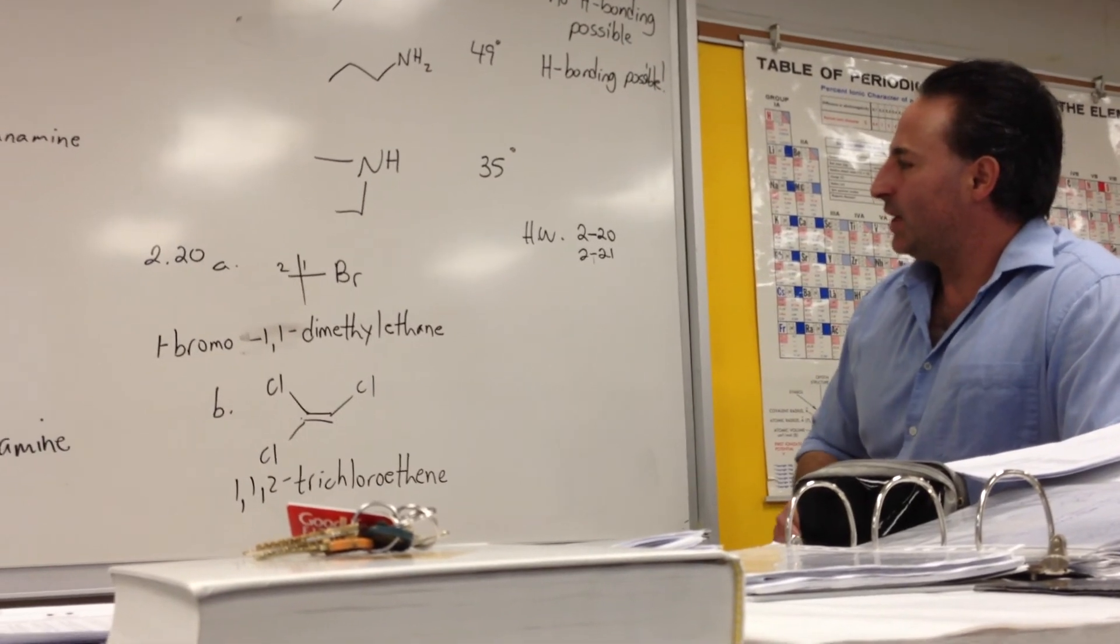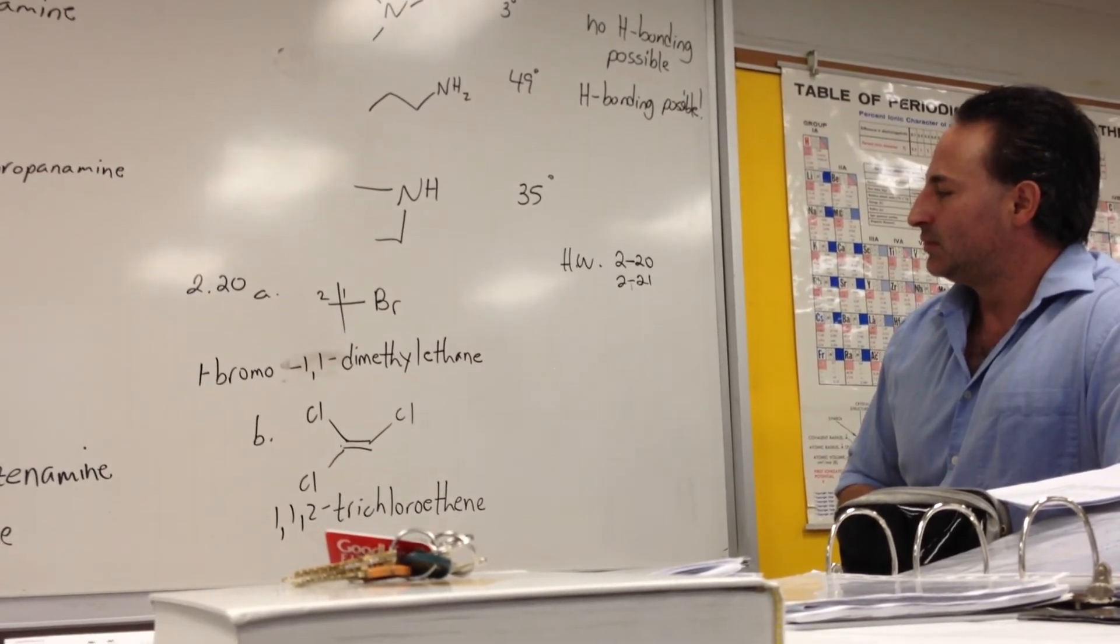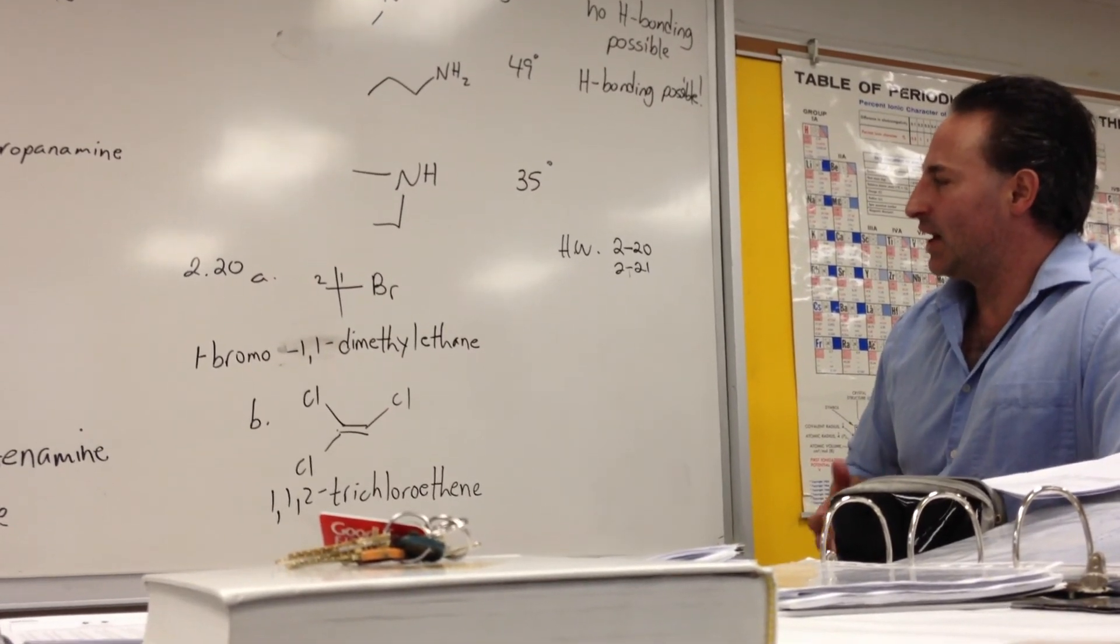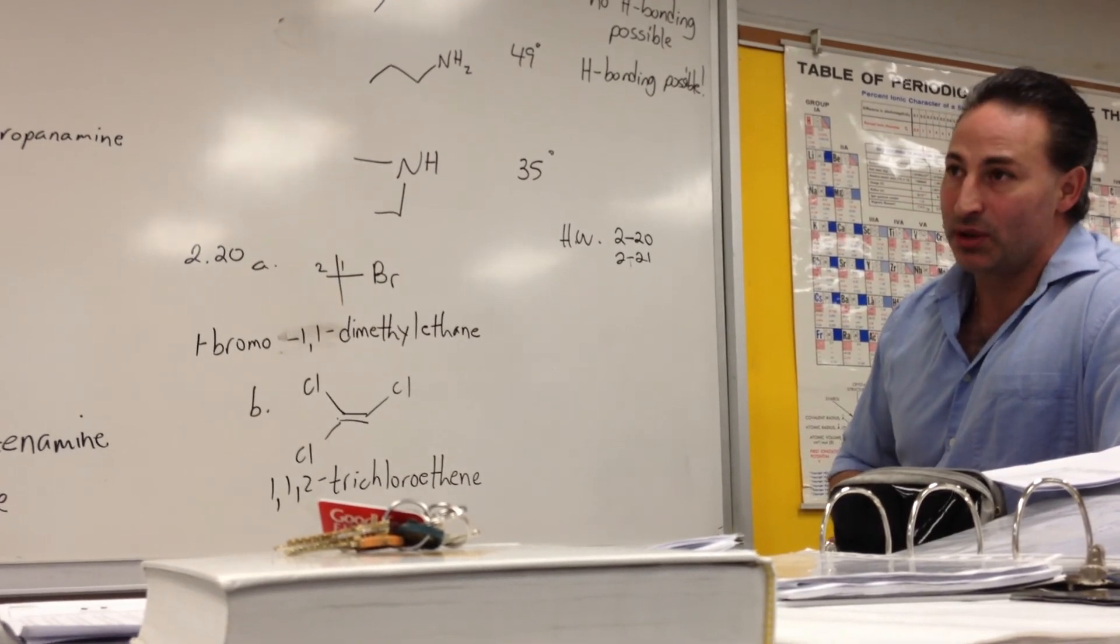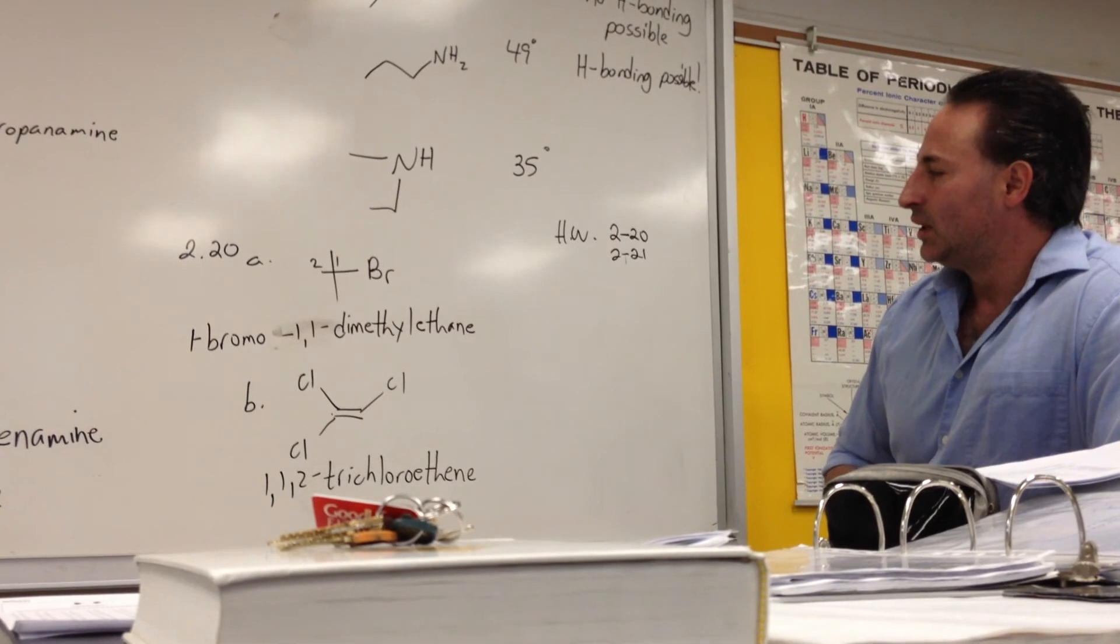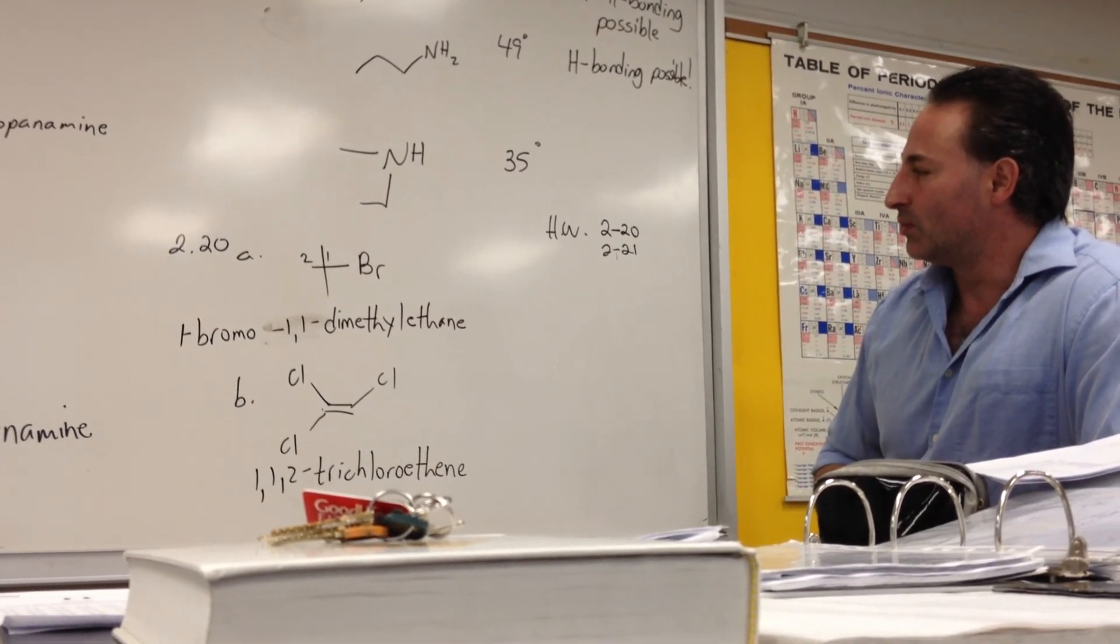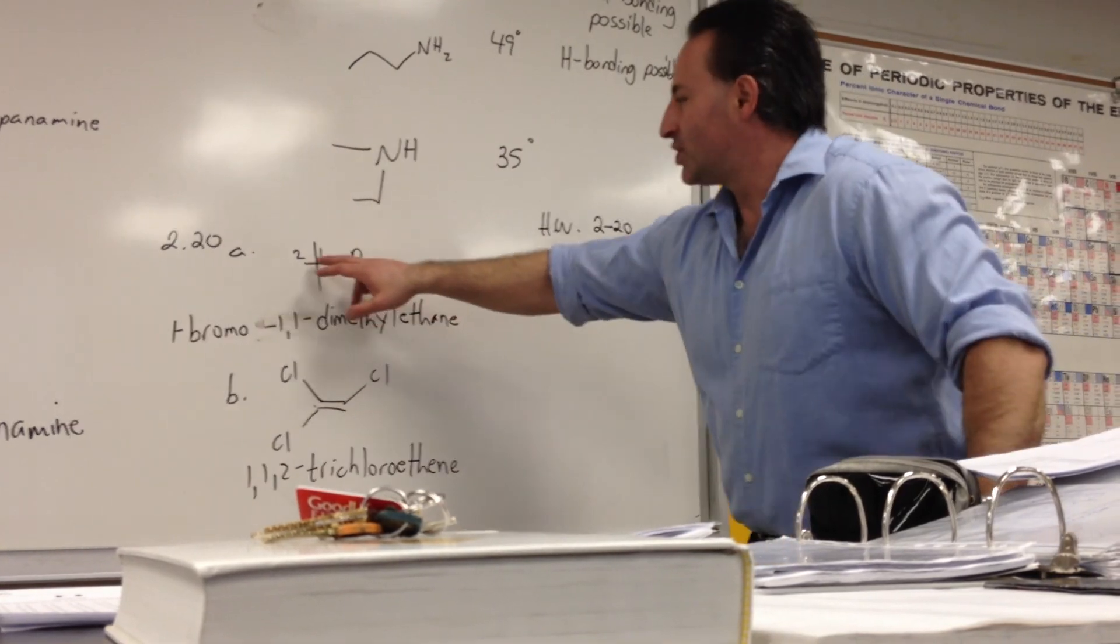And finally we have the nomenclature of haloalkanes. Whenever you have a halogen atom attached to an alkane, use the prefix bromo-chloro-iodo-fluoro, depending on which halogen you have attached.